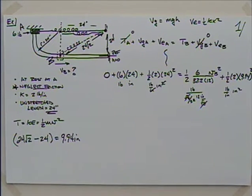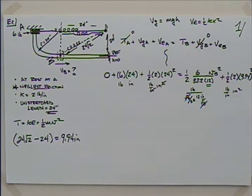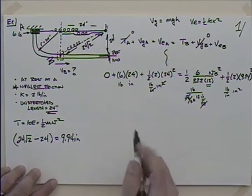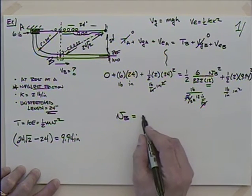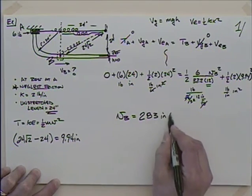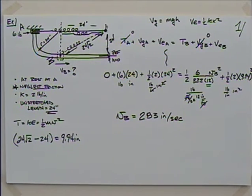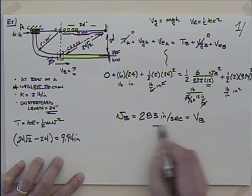It's definitely worth keeping track of units. Without careful accounting, we would have been tempted to leave off that factor of 12. Another approach would have been to convert everything into pounds and feet. Running through the calculation, the velocity at B turns out to be 283 inches per second.